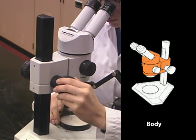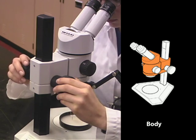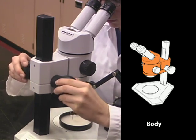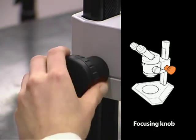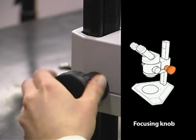The body of the stereo microscope holds the lenses and focusing mechanism. Stereo microscopes have only one focusing knob. With this knob, you move the body of the microscope closer or further away from the object.